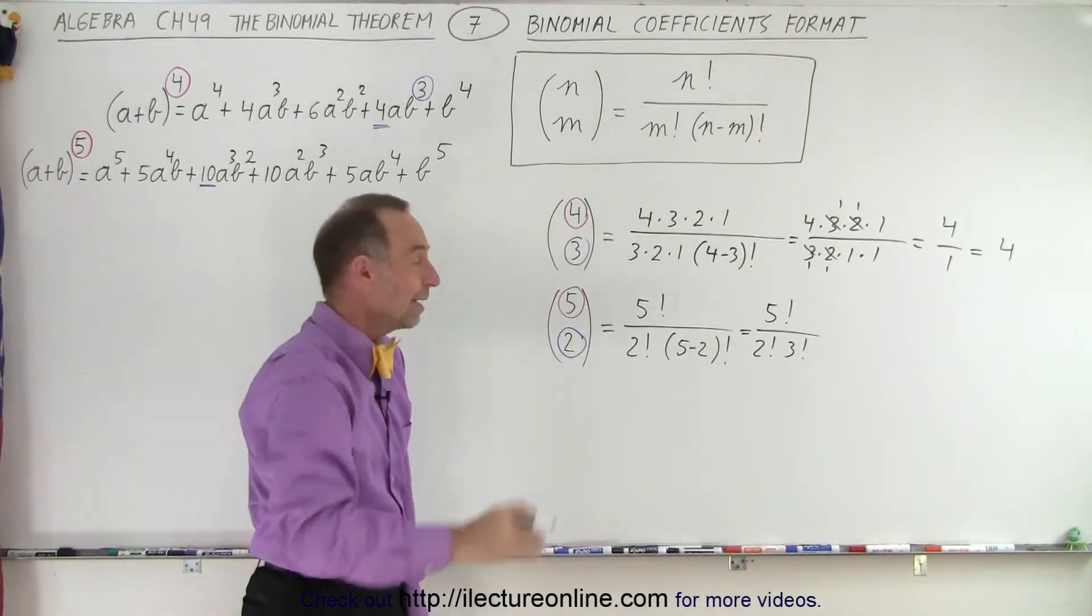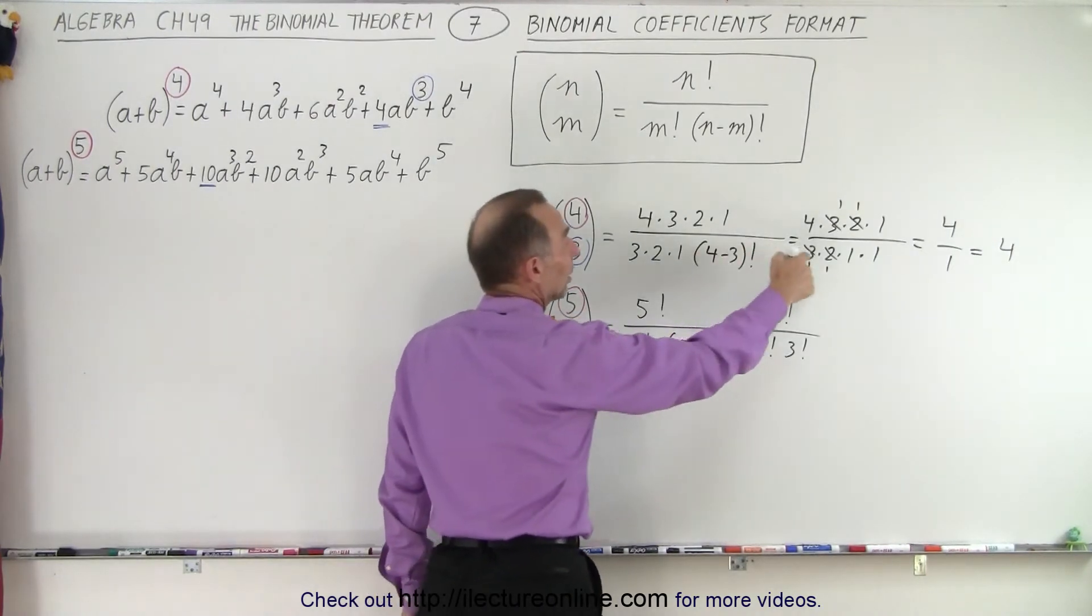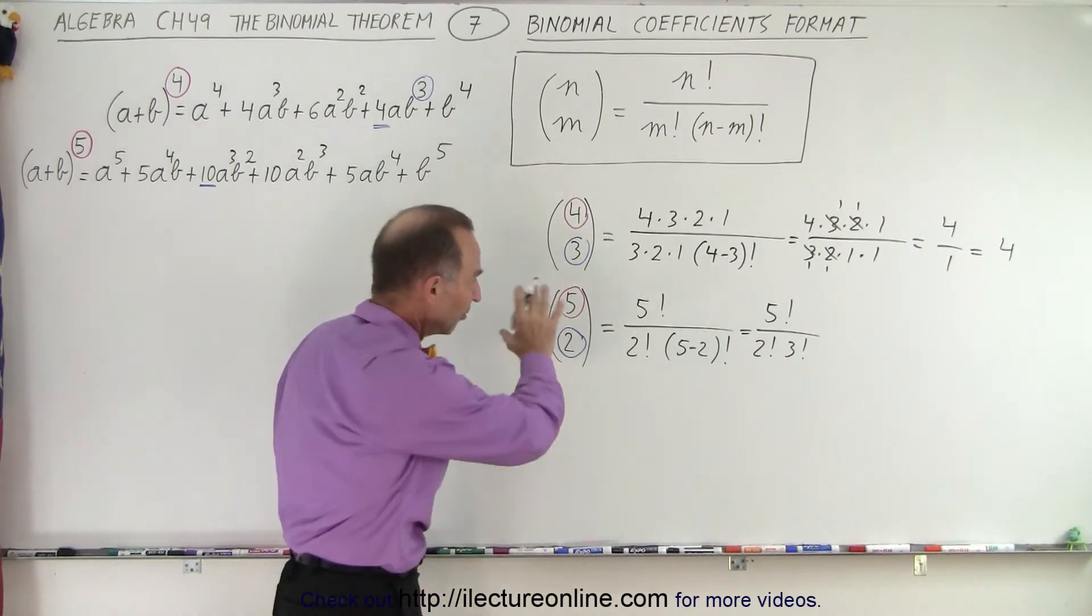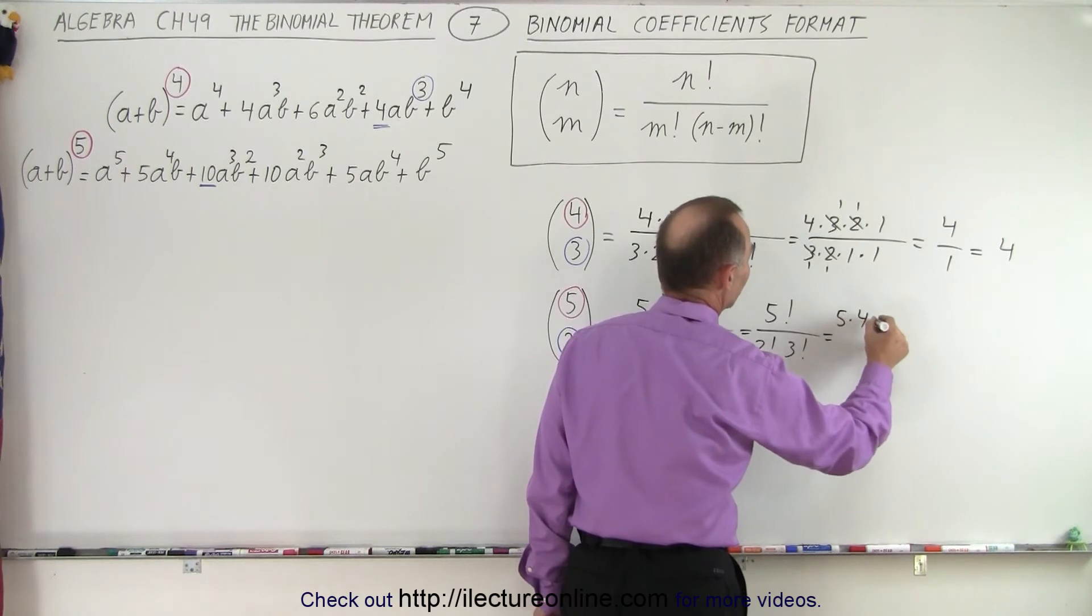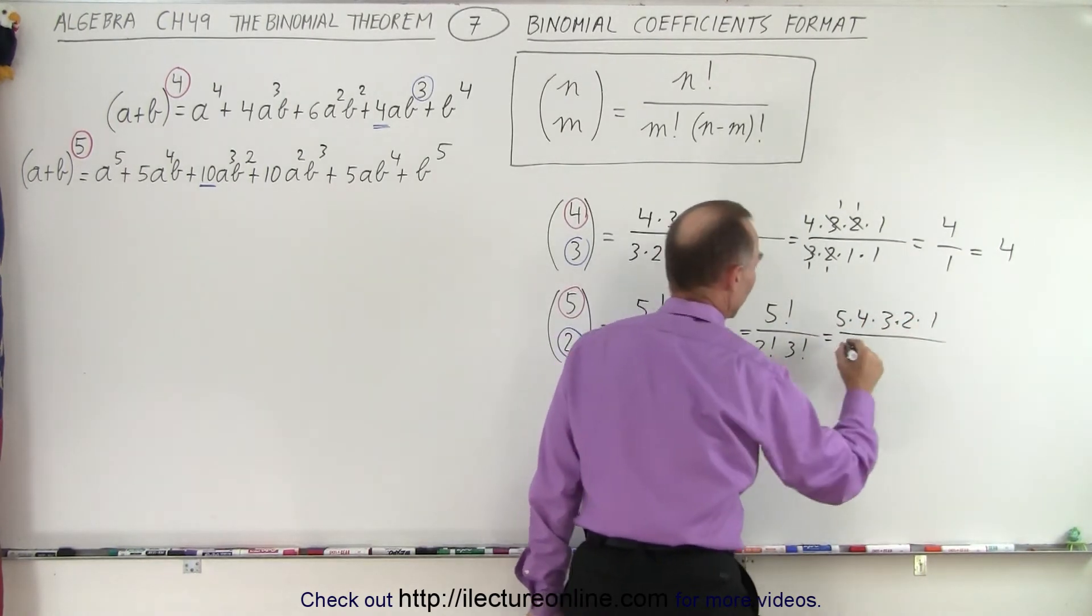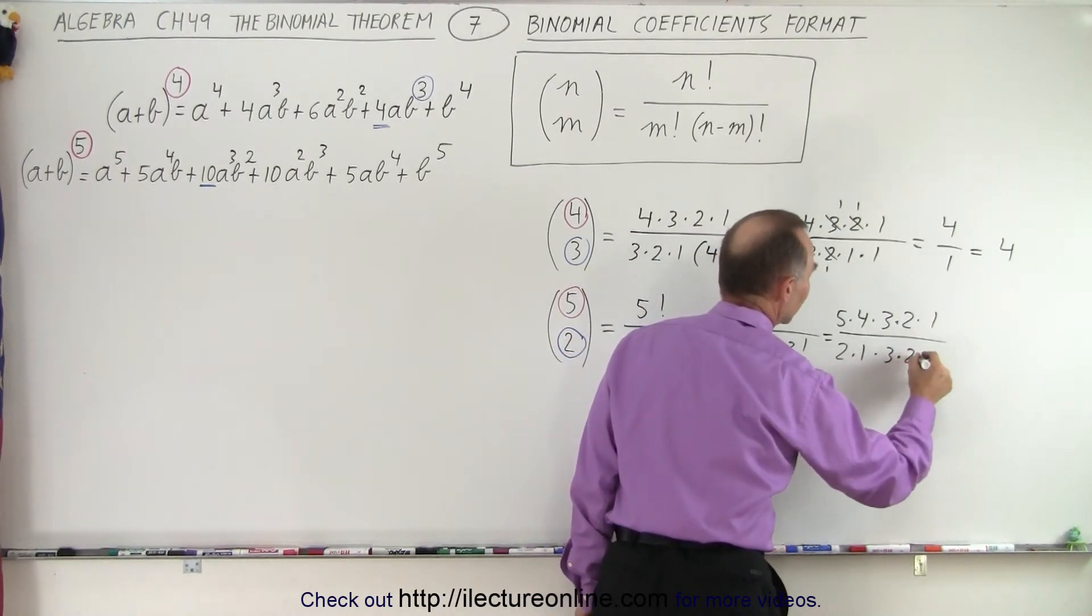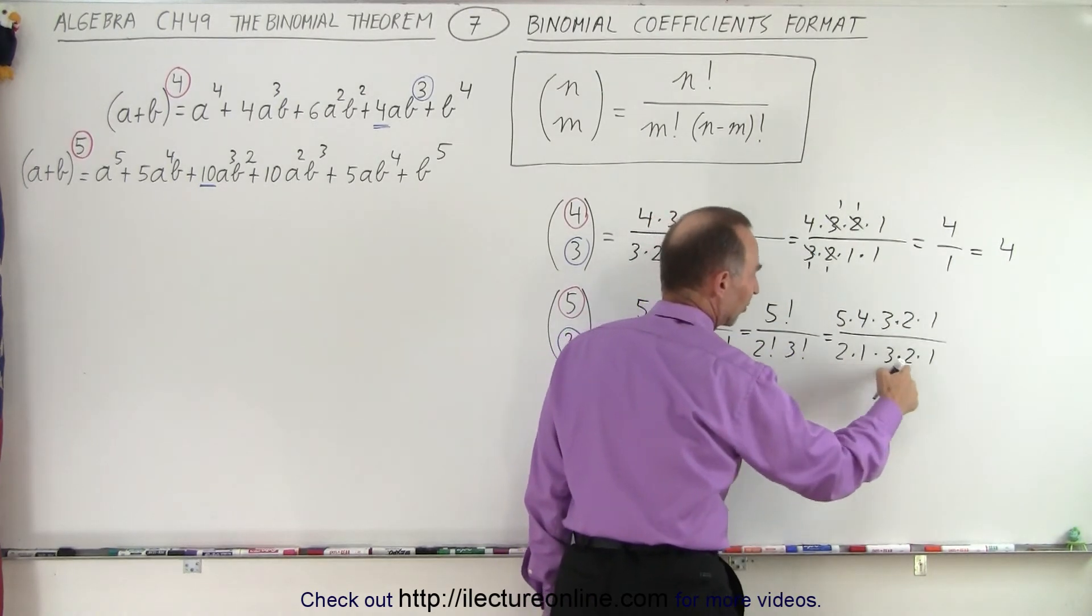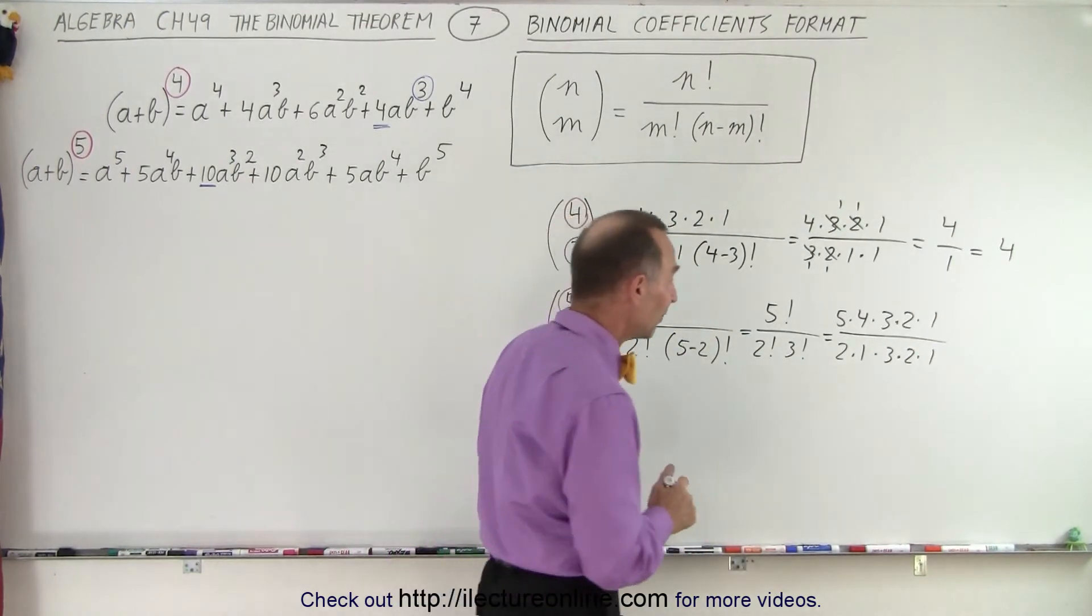Now we write it out. Often you don't need all these steps; you can go directly to this format if you're comfortable. This becomes 5 times 4 times 3 times 2 times 1 divided by 2 times 1 for the 2 factorial, times 3 times 2 times 1 for 3 factorial. Now we can simplify.